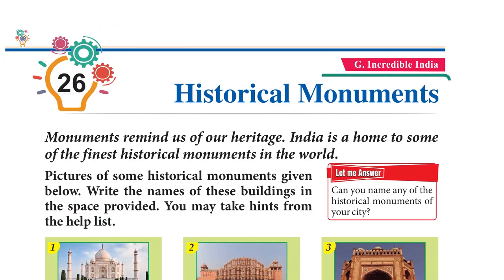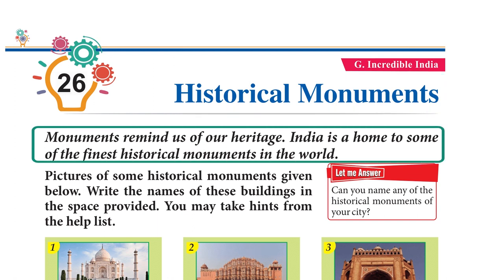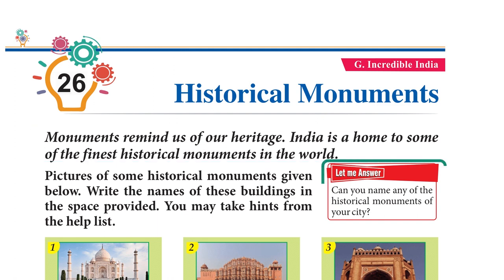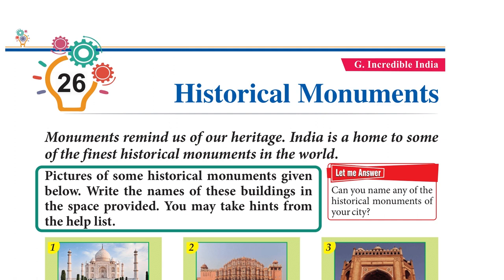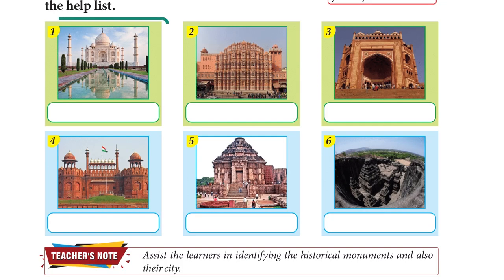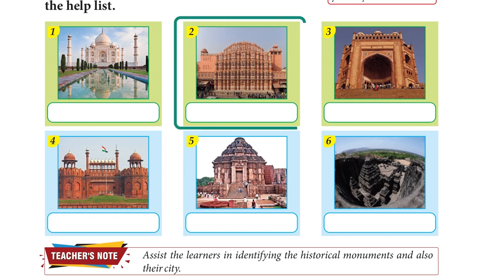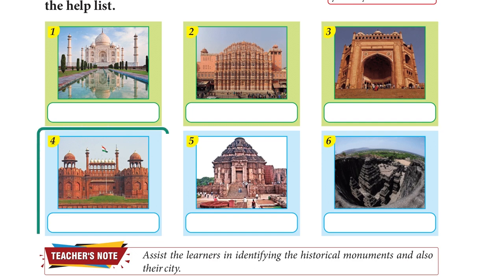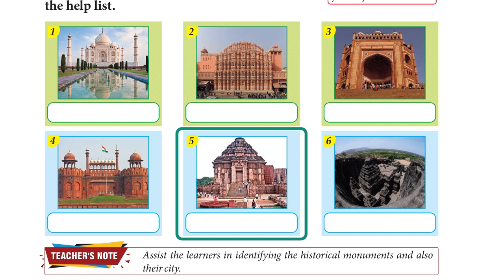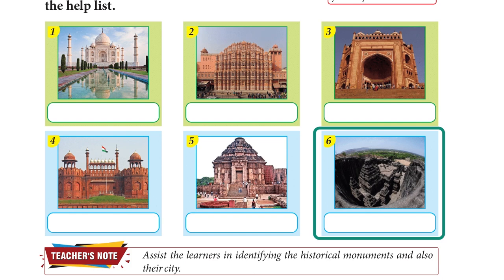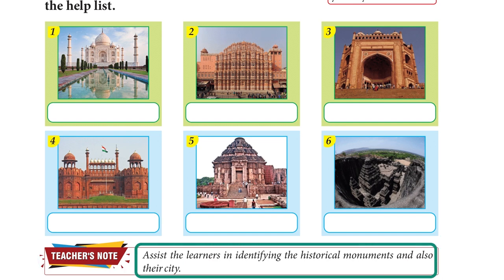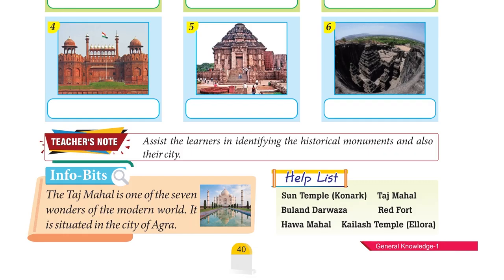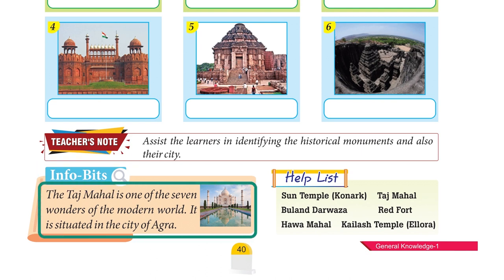Chapter 26: Historical Monuments. Monuments remind us of our heritage. India is home to some of the finest historical monuments in the world. Write the names: Taj Mahal, Hawa Mahal, Buland Darwaza, Red Fort, Sun Temple Konark, Kailash Temple Ellora. Teacher's Note: Assist the learners in identifying historical monuments and their cities. Info Bits: The Taj Mahal is one of the seven wonders of the modern world, situated in the city of Agra.